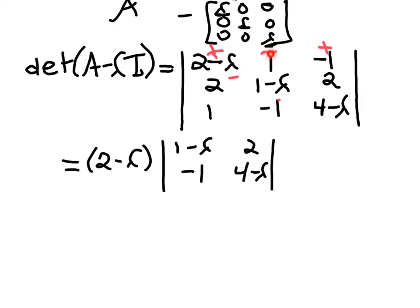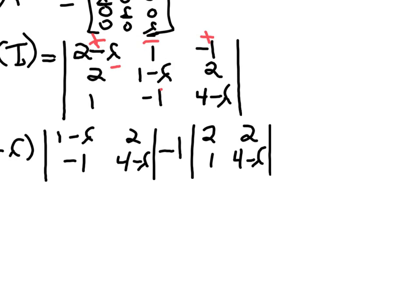Then we've got a negative sign, so minus 1 times the determinant of the 2 by 2 when we delete that column in the first row — so we have 2, 1, and 2, 4 minus lambda. And then in the last position along this row, we have a positive sign but the entry is negative 1, so we have negative 1 times the determinant of the remaining 2 by 2 — that's 2, 1, 1 minus lambda, negative 1.